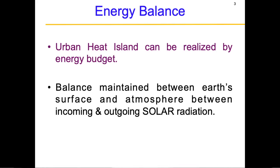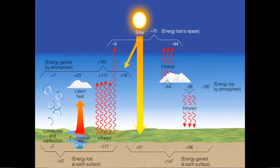A balance is maintained between the earth's surface and atmosphere, mainly between the incoming and the outgoing solar radiation. The sun's heat energy is the major source of thermal energy being sent to the atmosphere, earth's atmosphere and surface. In the next coming slides, I'm going to break down how this heat energy from the sun contributes to the creation of heat islands and how we can reduce their formation.